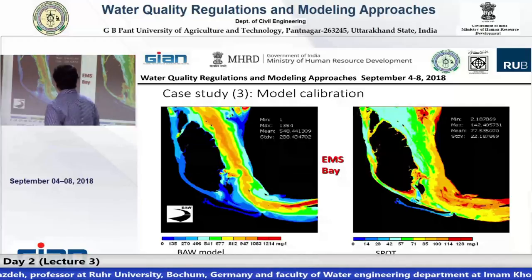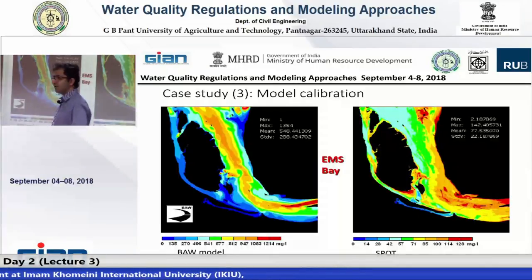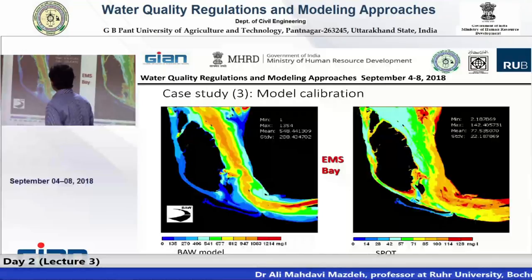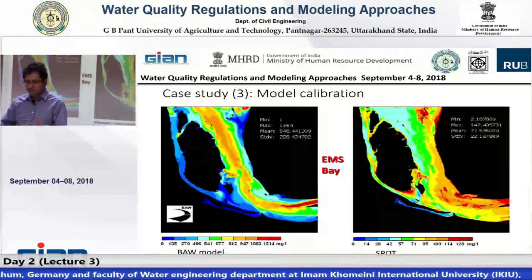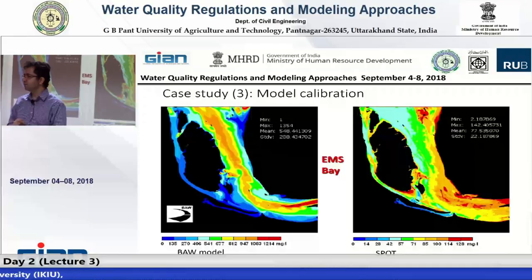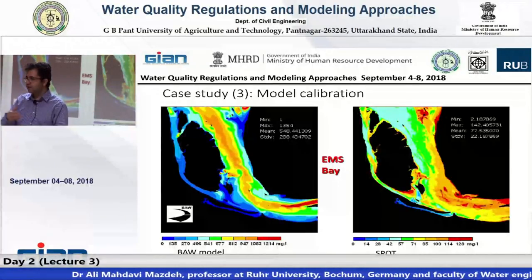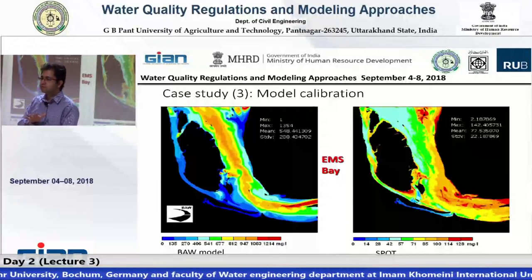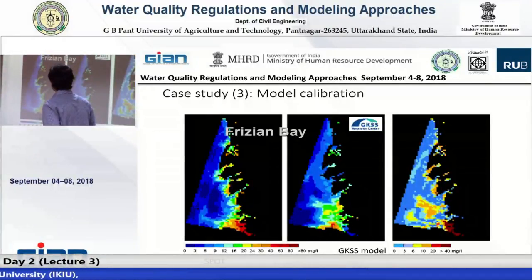You can see a good agreement between the remote sensing results and the model outputs. The model used here is BAW, and you can see they have similar results. This technique is less useful for rivers because rivers are usually smaller — fewer pixels inside the river — and the shallower depth affects the signal more. For coastal seas, the greater depth makes it easier to retrieve good data. This is another calibration example from the Frisian Bay.